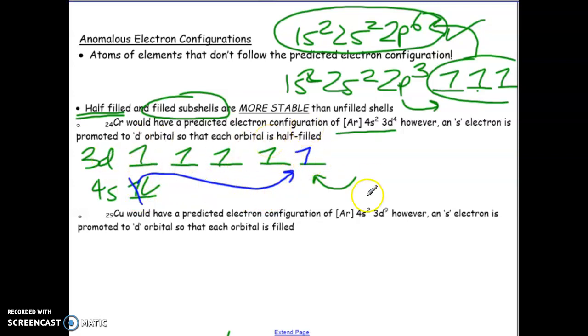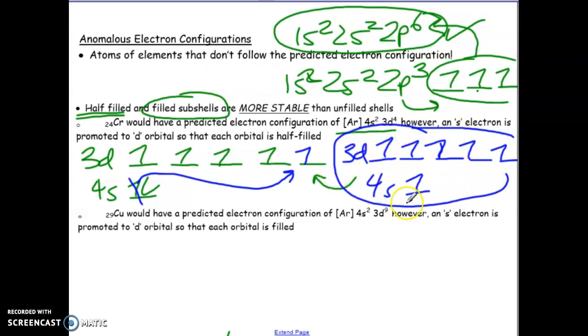which would then create a half-filled 4s and a half-filled 3d. Because all of them are half-filled, this is actually considered to be stable. This is considered to be an anomaly because instead of drawing out the predicted one, it actually has a different configuration. Normally, we would never have a half-filled 4s before we would start - 4s has to be filled before we continue on. But chromium is an example of an anomalous element.